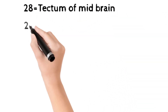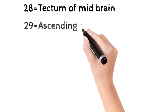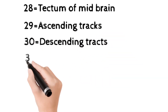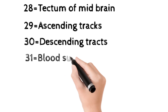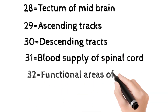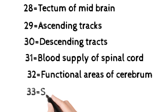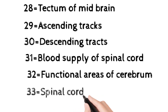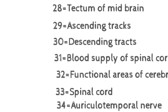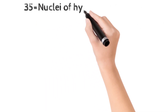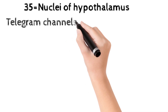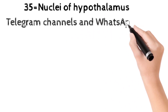The 28th is the tectum of midbrain, 29th is the ascending tracts, and 30th is the descending tracts, and 31st is the blood supply of the spinal cord, and 32nd is the functional areas of the cerebrum, and 33rd is the spinal cord in detail, and 34th is the auriculotemporal nerve, and the 35th and last topic is the nuclei of hypothalamus.